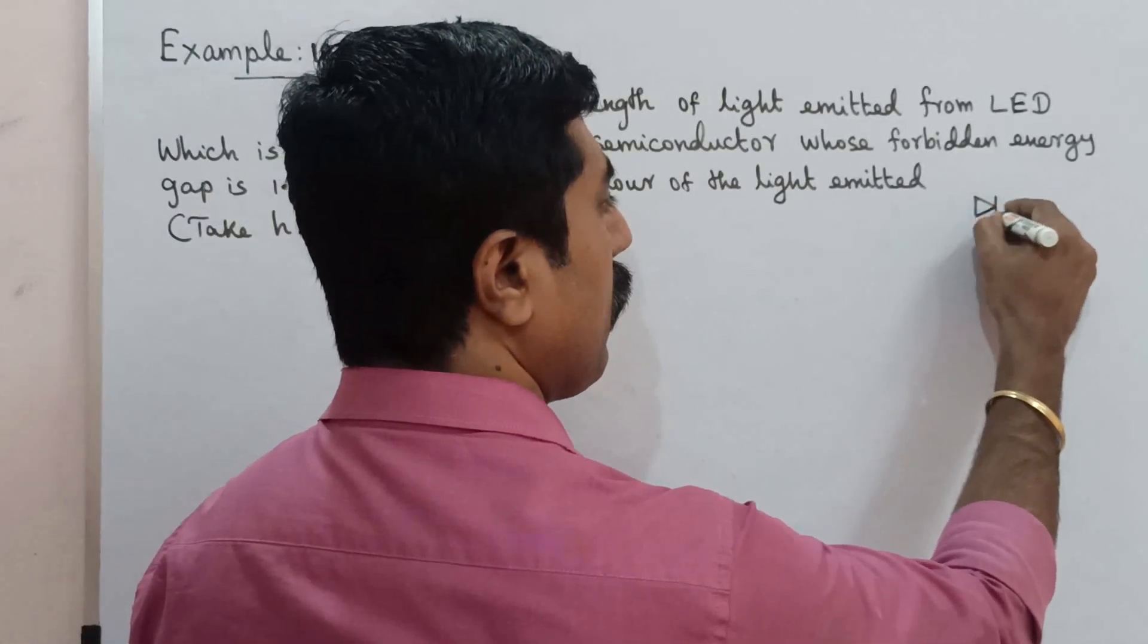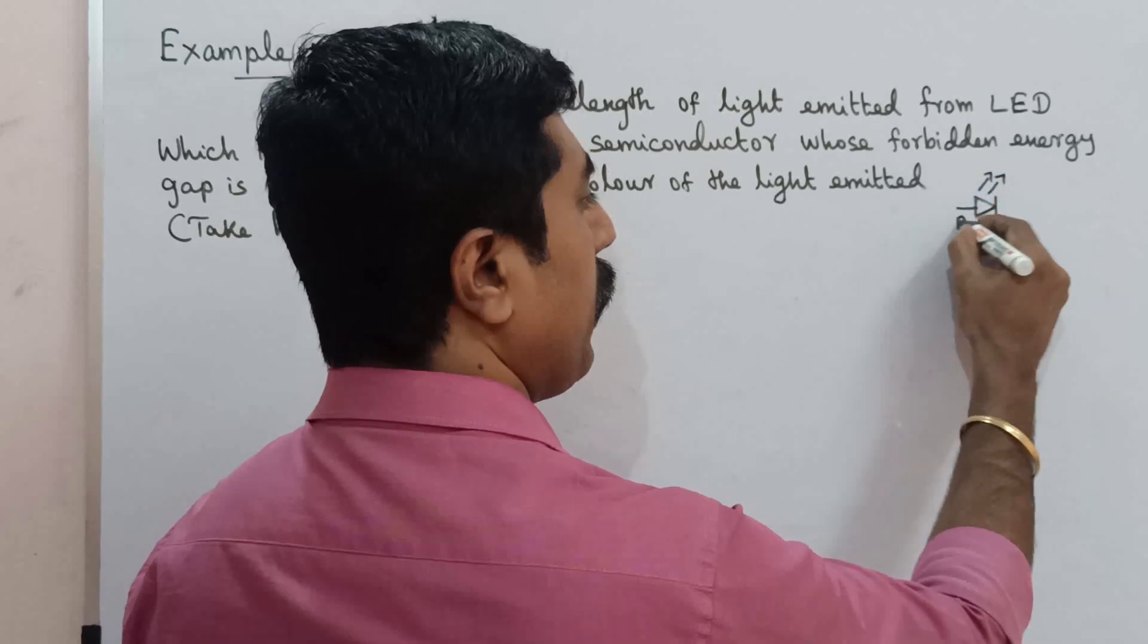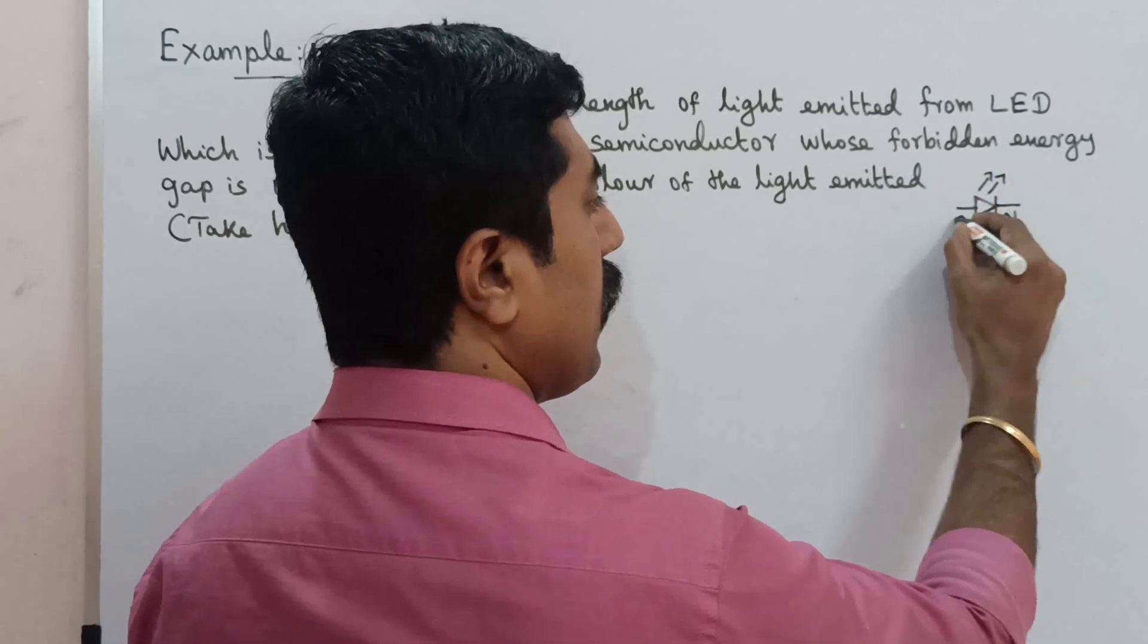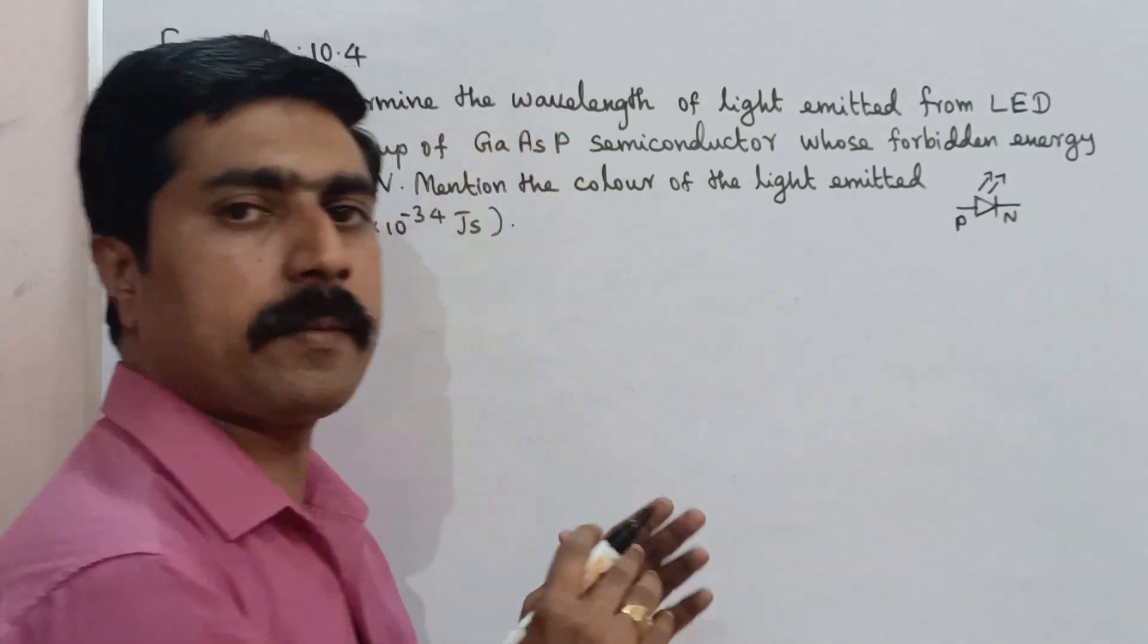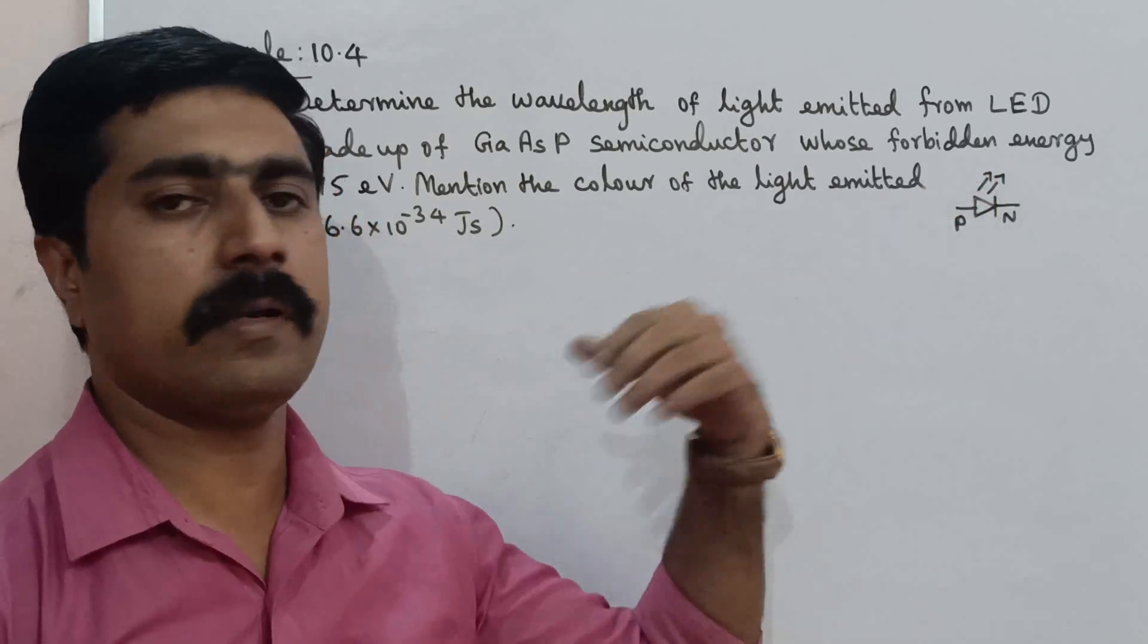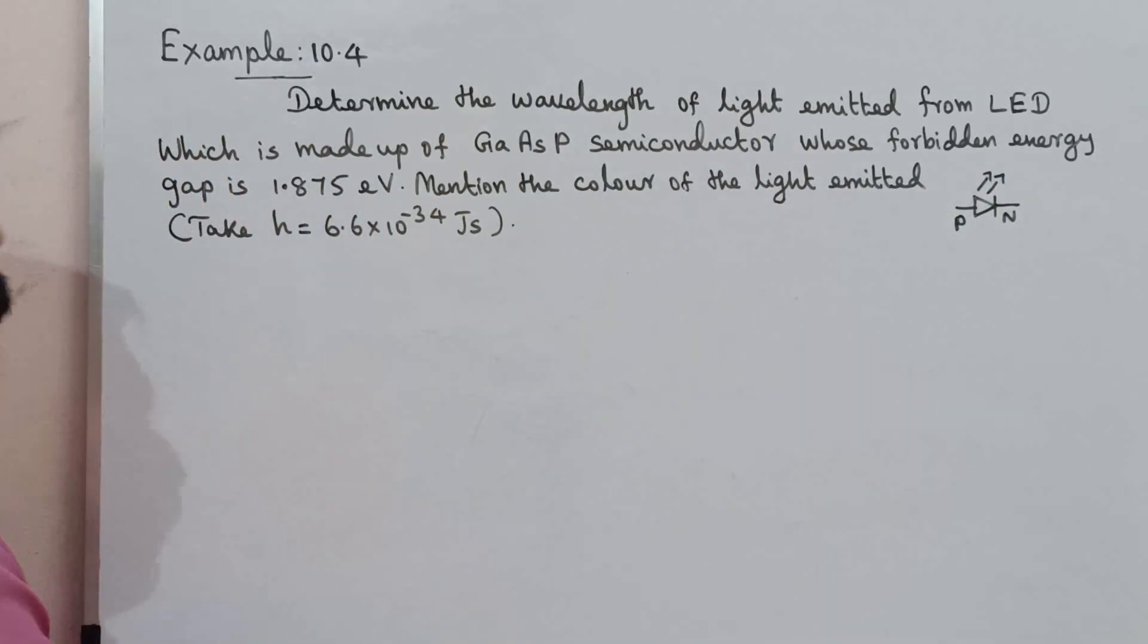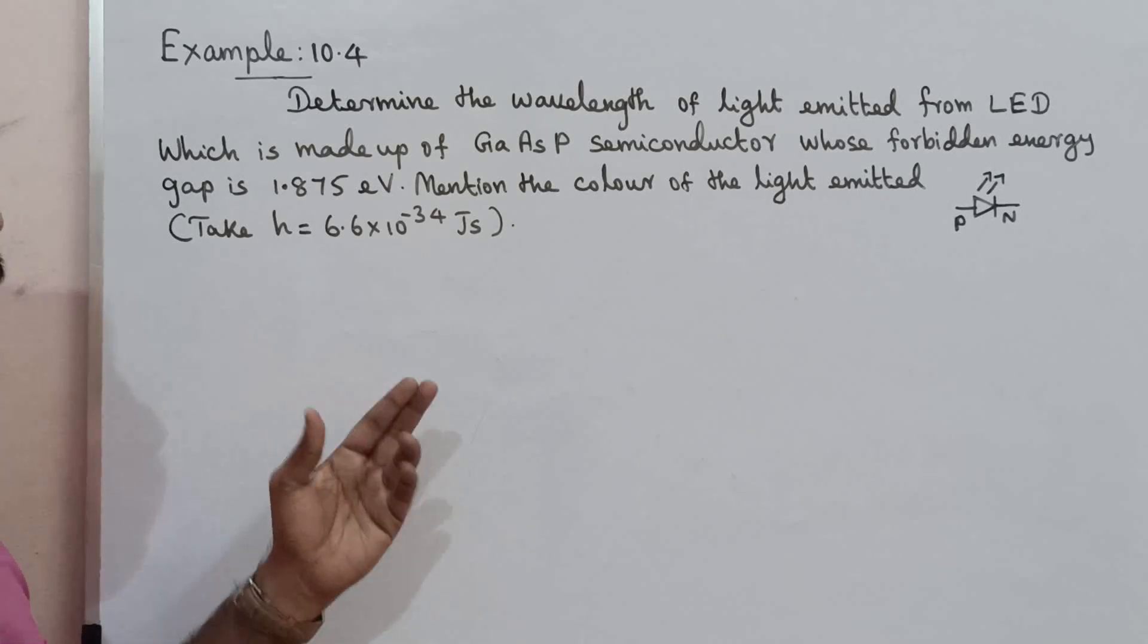The diode symbol is in this way - P region, N region. Forward bias connects with the diode. Electrical energy converts to light energy. That is how light is emitted. Forward bias in the diode.